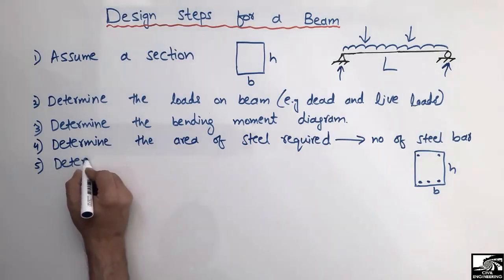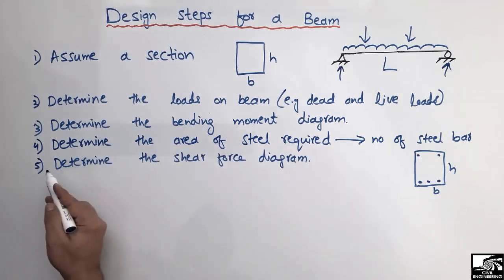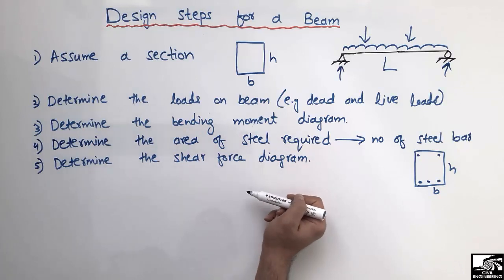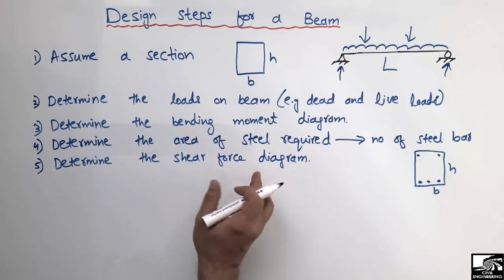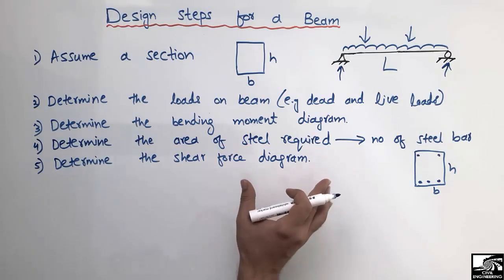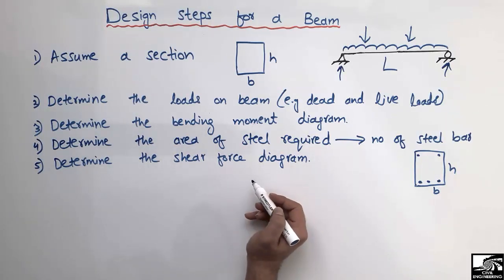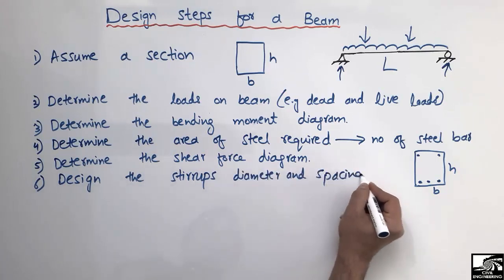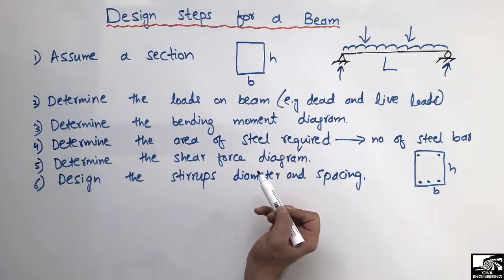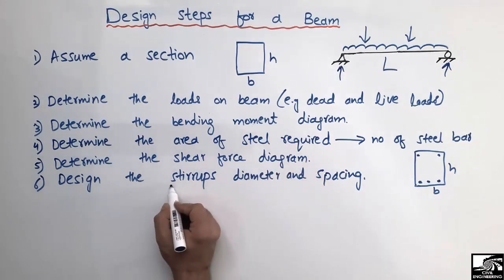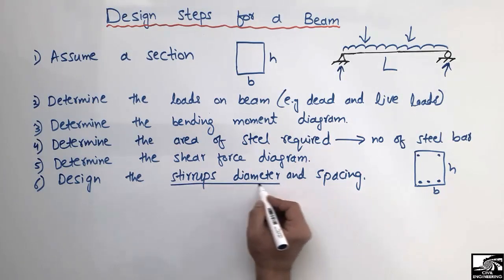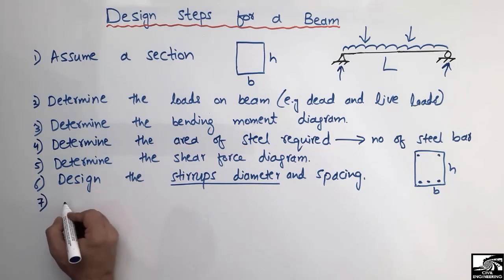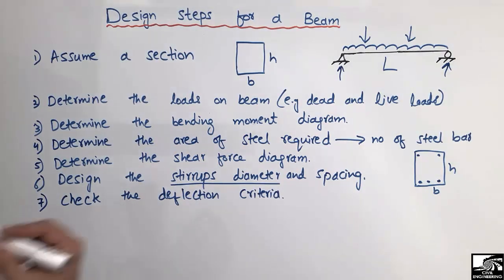The fifth step is to determine the shear force diagram. We can draw the shear force and bending moment diagrams together, then find the respective area of steel required. After determining the shear force diagram, the sixth step is to design the shear reinforcement in the form of stirrups — determining the stirrup diameter and spacing, which is important for resisting shear stresses.